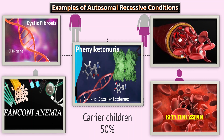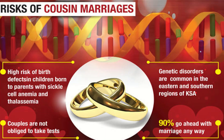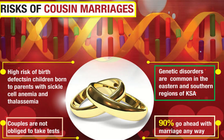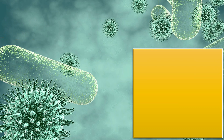Genetic disorders are common in the eastern and southern regions. Despite awareness, couples are not always obliged to take tests, and there are high risks of birth defects in children born to parents carrying sickle cell anemia and thalassemia, which are autosomal recessive disorders common in consanguineous marriages.